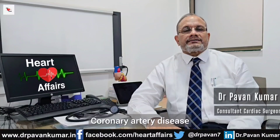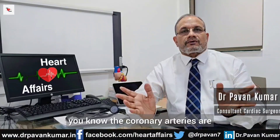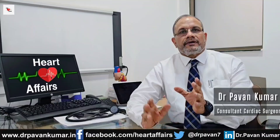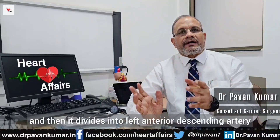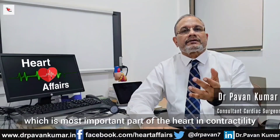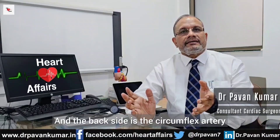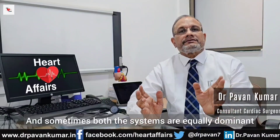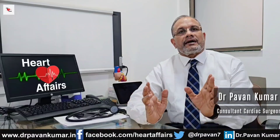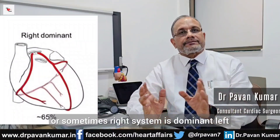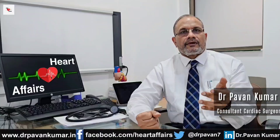If coronary artery disease is extensive, the coronary arteries consist of the left coronary system and right coronary system. The left coronary system starts from the left main, which divides into the left anterior descending artery — supplying the front of the heart and the septum, the most important part — and the circumflex artery at the back. On the right side is the right coronary artery. Dominance of these systems varies and influences treatment decisions.